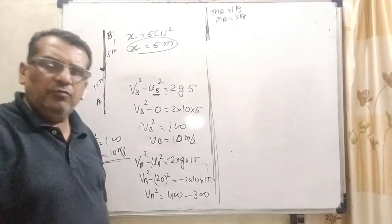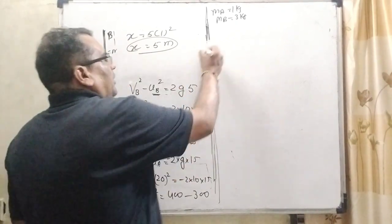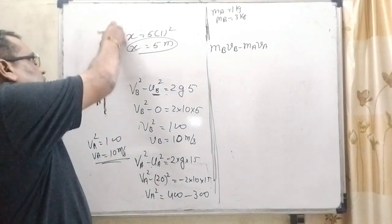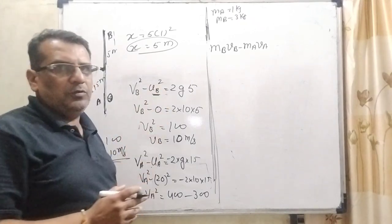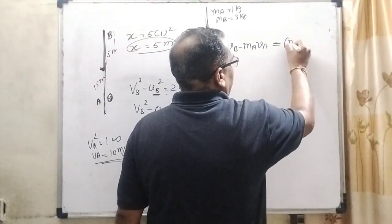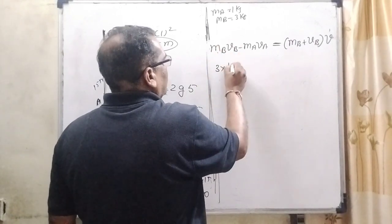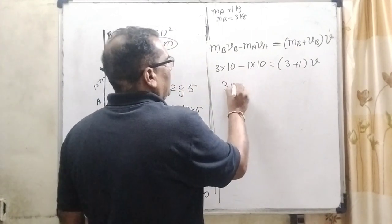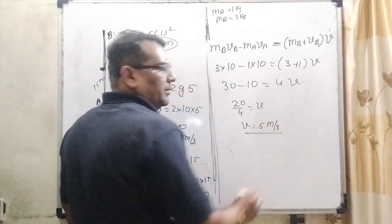Now we are using laws of conservation of momentum. What says the laws of conservation of momentum? Momentum before collision equal to momentum after collision. So MB VB minus MA VA. Why have we taken minus? Because when object B is dropped, its direction is downward, and when object A is projected, its direction is upward. So the velocity of A and B is opposite. After collision, they will stick. They will stick, meaning inelastic collision and its velocity becomes common. So MB plus MA into common velocity V. Substitute the values: MB is 3 kilogram, VB is 10, MA is 1 kilogram and it is also 10. So 30 minus 10 equal to 4 V. 20 by 4, so V is 5 meter per second.